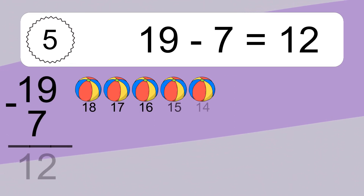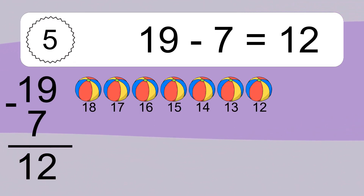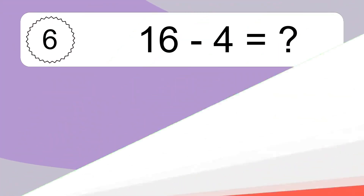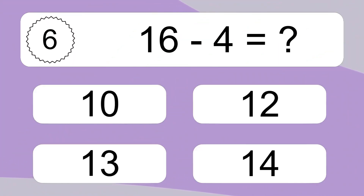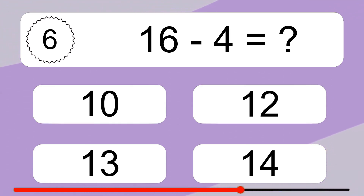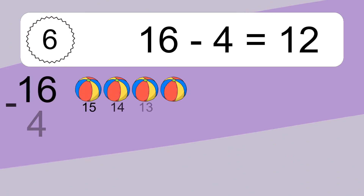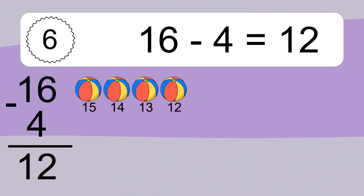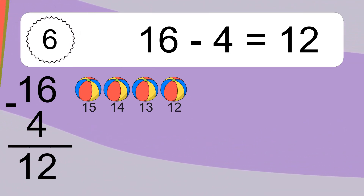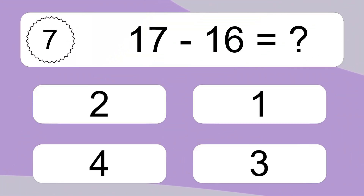19 minus 7 equals what? 19 minus 7 equals 12. Let's count it. 18, 17, 16, 15, 14, 13, 12. 16 minus 4 equals 12. Let's count it. 15, 14, 13, 12.